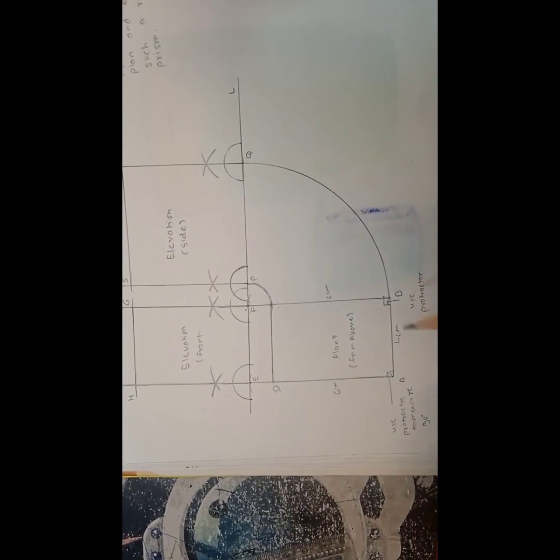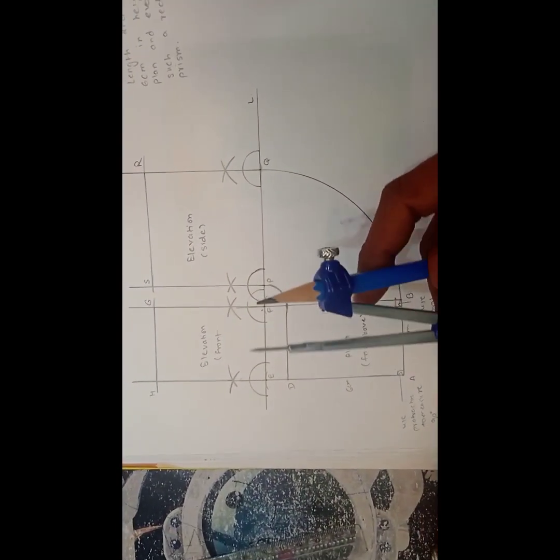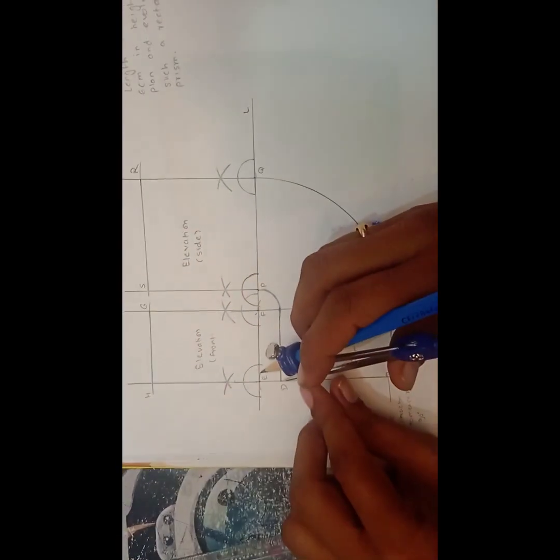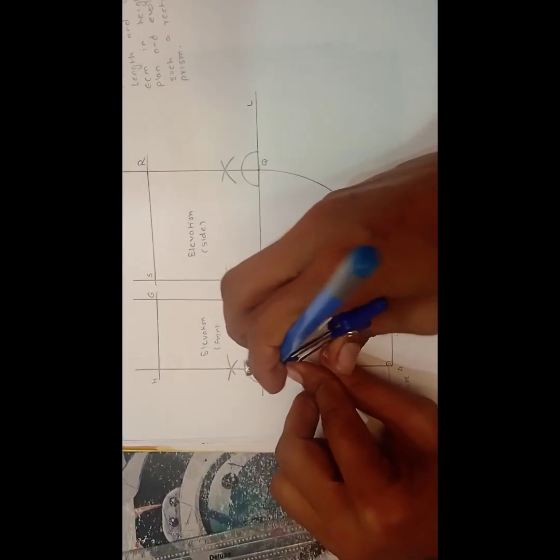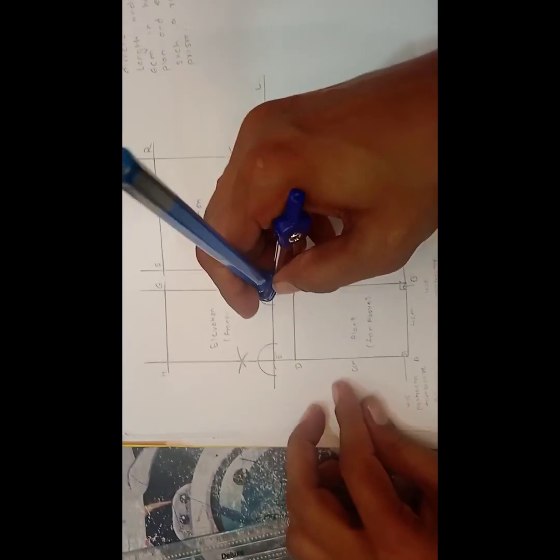So what to do then? First of all take a little bit distance in the compass. Compass should be fixed. Then hold it on the point B and put an arc. Keep the distance same and put another arc.